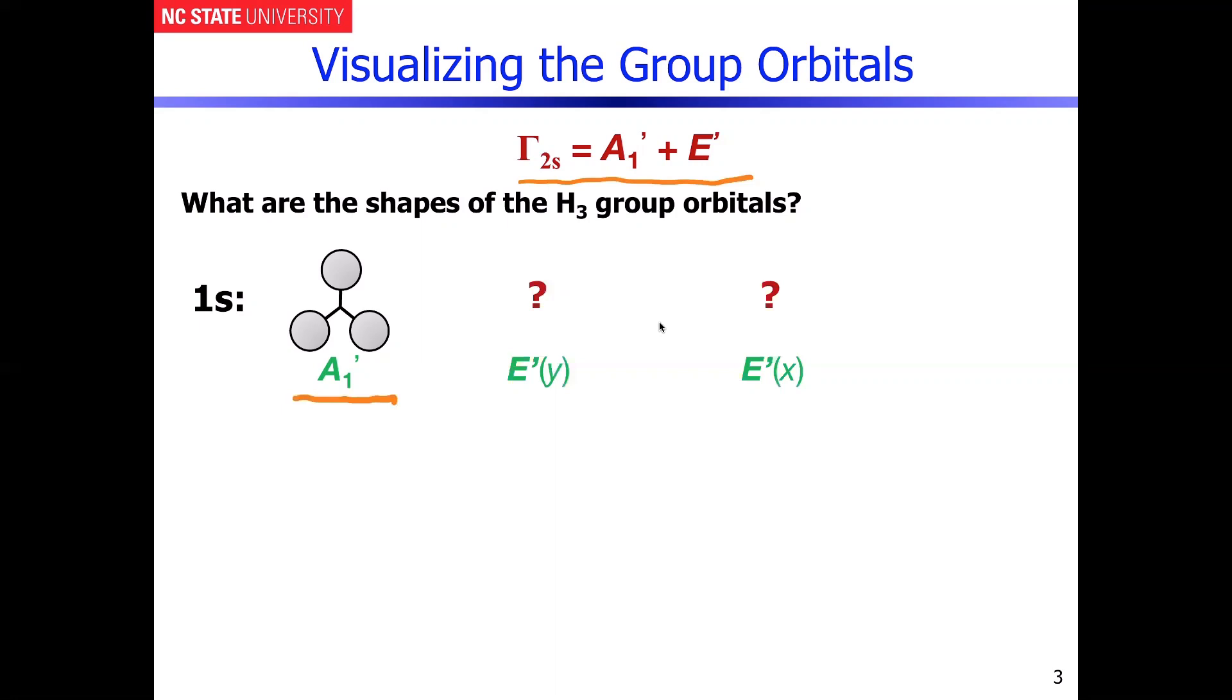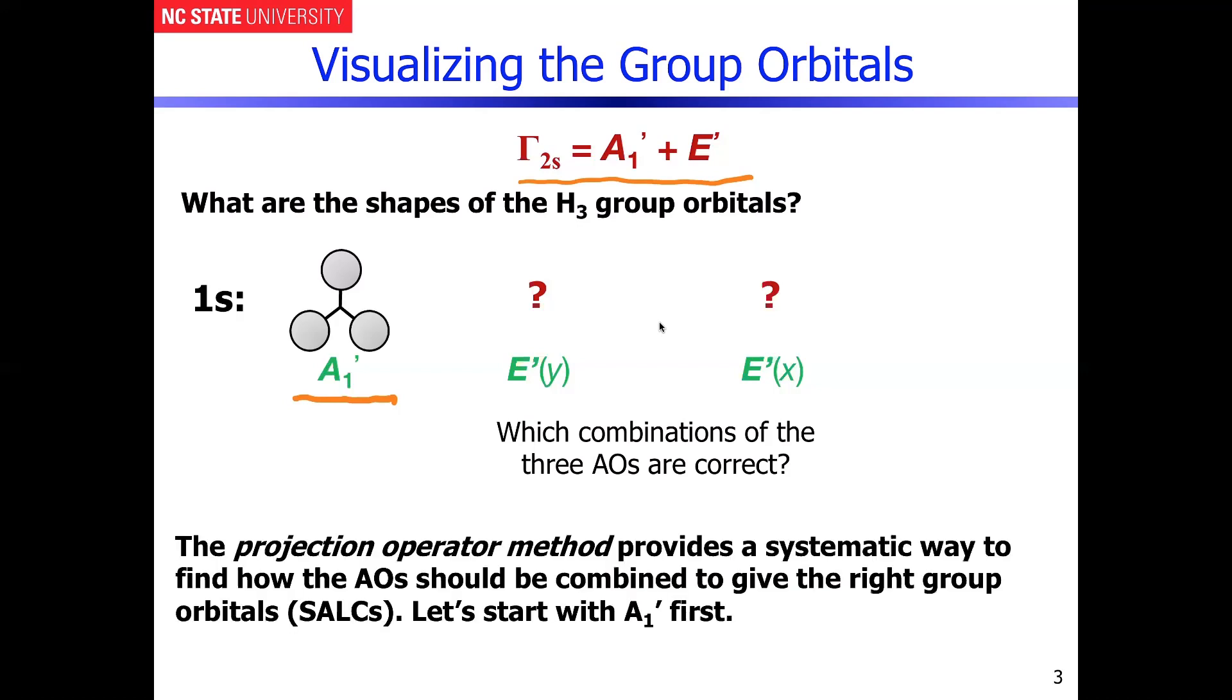The first thing is we know that these are going to have to actually possess the properties of Y or X, and they're going to be degenerate. So we have to sort of work through how that's actually going to be possible. And this is a very straightforward procedure, but it requires a little bit of detail. So let's get started to figure out what are the combinations going to be of those 1s orbitals that then completes this set of group orbitals.